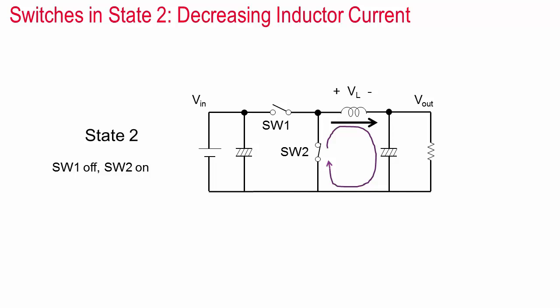When switch one is open and switch two is closed, current flows as shown. You're probably thinking this looks wrong and why doesn't the capacitor discharge through the inductor? The inductor's magnetic field acts to try to maintain the current through it in the same direction. Now the voltage across the inductor is zero minus V out equals L di dt. di dt now has a negative sign meaning the inductor current will decrease and V out starts to decrease.